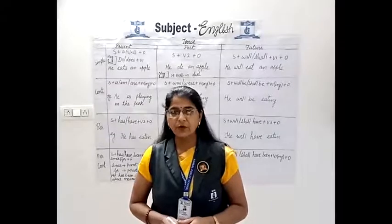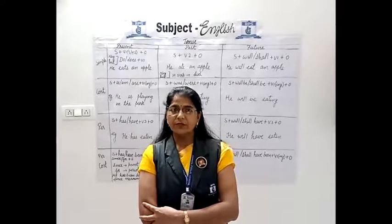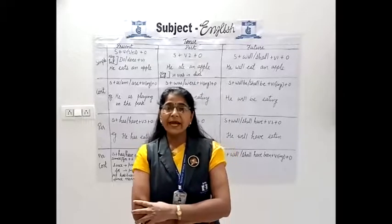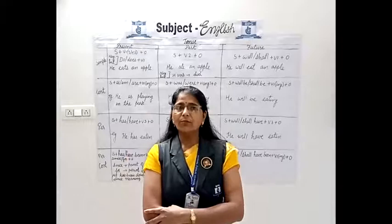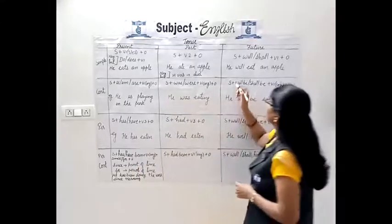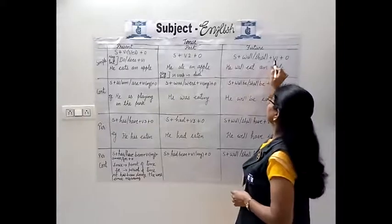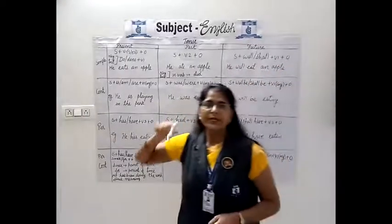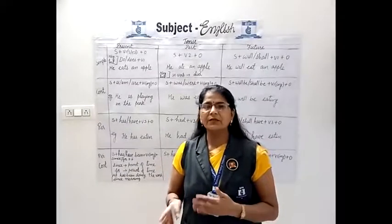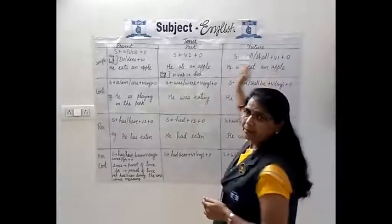Hope past tense is clear to you. Now let's look at future tense — an action going to take place in future. First, future simple tense: an action that takes place in future. Example: 'She will go to market tomorrow.' Structure: subject plus will/shall plus V1 plus object. With 'I' and 'we', we use 'shall'; with all other subjects, we use 'will'. Example: 'He will eat an apple.'